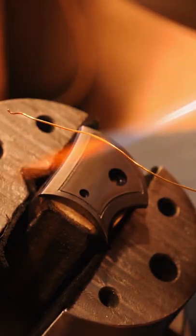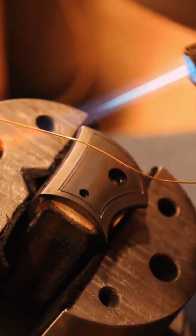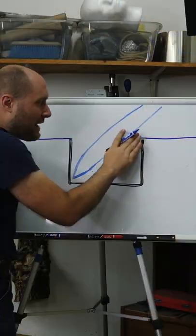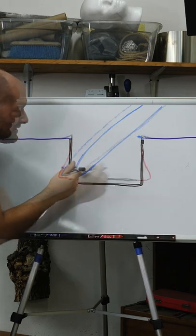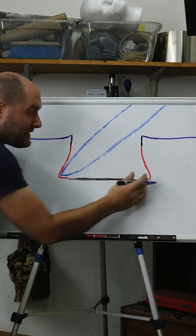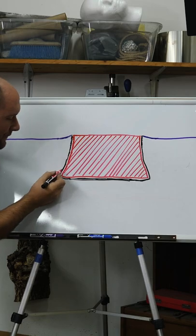The reason being, with inlay, you're going to make dovetails at the bottom of your grooves that you're putting your wire into, and you need that material soft enough that you can smash it in there and have it fill out those dovetails to hold it in place and lock it in there mechanically.